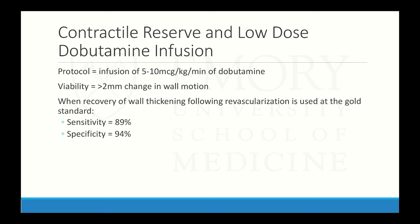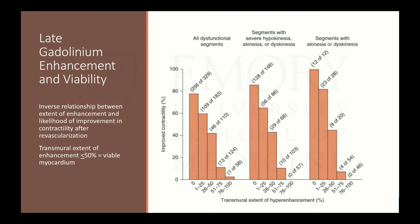For contractile reserve with low-dose dobutamine, we use 5 to 10 micrograms per kg per minute. Viability is assumed present if there's greater than 2 millimeters change in wall motion — sensitivity 89%, specificity 94% using wall thickening after revascularization as the gold standard. For late gadolinium enhancement — the most widely used method — there's an inverse relationship between the extent of enhancement and likelihood of improvement after revascularization. The threshold is 50% or below as viable. In approximately 329 patients with varying degrees of wall motion abnormalities, there was less than a 10% chance of improvement in contractility once more than 50% late gadolinium enhancement was present.